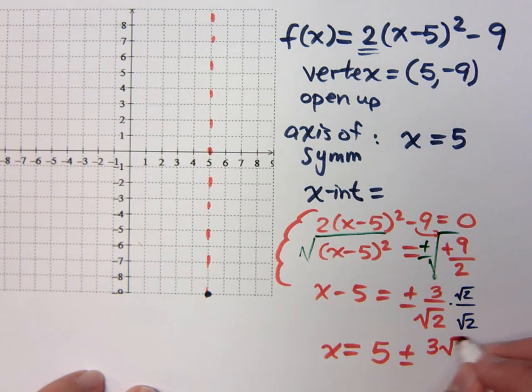What's the numerator? 3 square root of 2. What's the denominator? What's the square root of 2 times square root of 2? 2. Square root of 4, which just gives you 2.